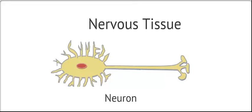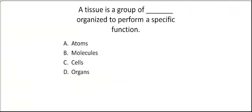These are the four categories of tissues that make up the organs and other structures of our body. Now, time for some questions. A tissue is a group of blank organized to perform a specific function. Is that atoms, molecules, cells, or organs?